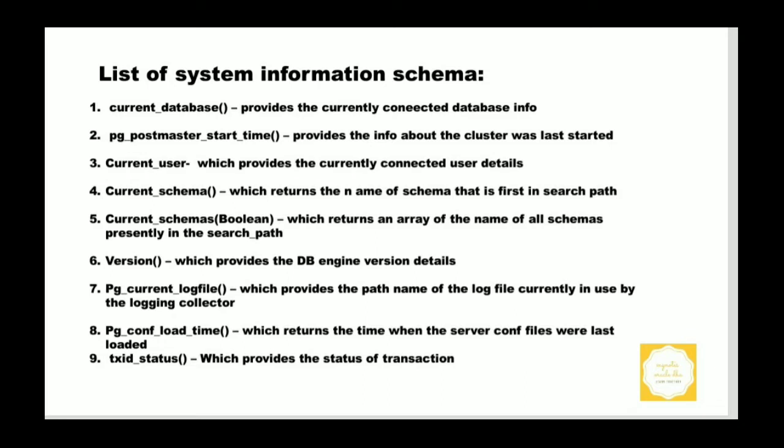The next one is current_schemas(boolean), which returns an array of the names of all schemas presently in the search path. The boolean option determines whether or not implicitly included system schemas such as pg_catalog are included in the returned search path. The version() function provides the database engine detail.